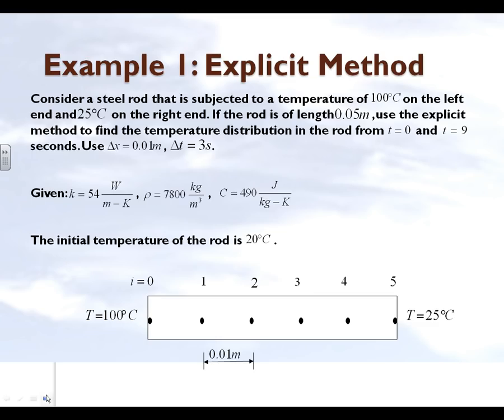We are using the explicit method, which is the method where we are able to find the temperatures at different nodes based on the temperatures from the previous time step.